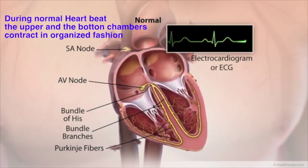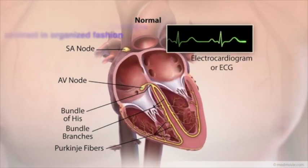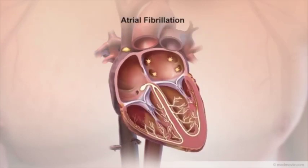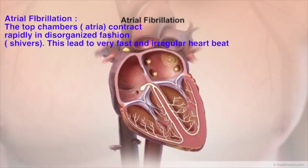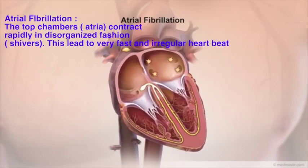Normal heartbeats can be seen on an electrocardiogram, or ECG. Atrial fibrillation is a type of heart arrhythmia, or irregular heartbeat.